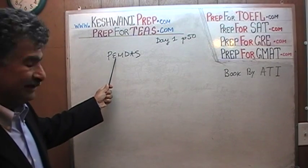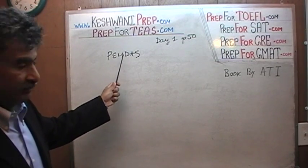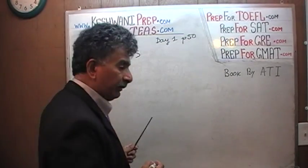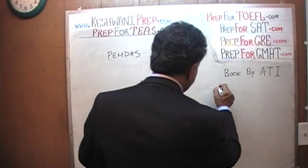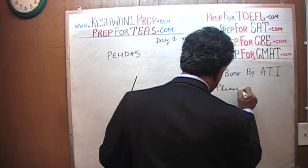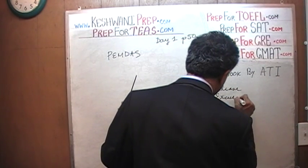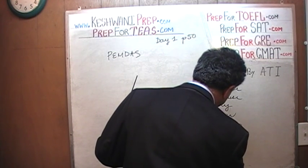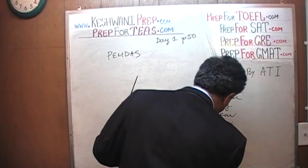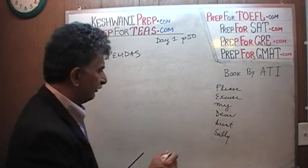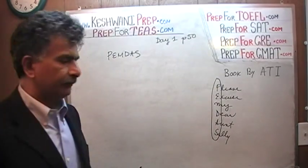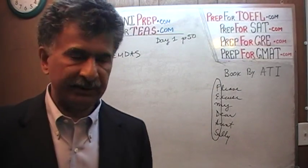P is for parenthesis, E is for exponents, M multiplication, D division, A addition, and S subtraction. They must be done in this order. The mnemonic that one typically uses is: Please excuse my dear aunt Sally. PEMDAS, as you can see there.